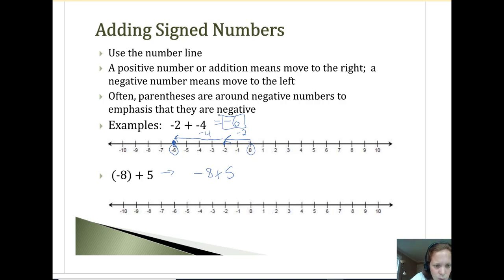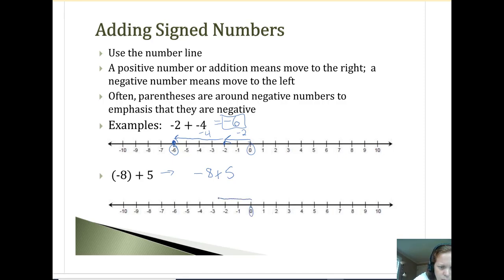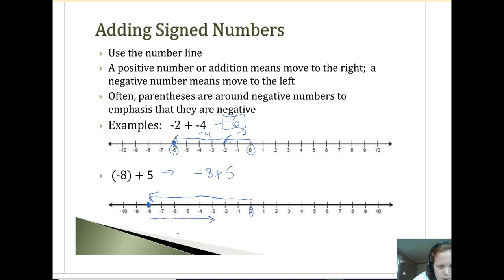Now the next one. If I start at zero and go negative eight, I'm down at negative eight. Then I go positive five — one, two, three, four, five to the right, because now I'm adding five. So negative eight to the left, adding five means going to the right — I end up at negative three.